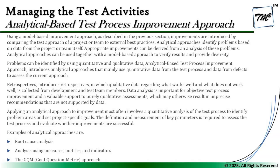Problems can be identified using both quantitative and qualitative data. The analytical-based test process improvement approach mainly uses quantitative data from the test process and defect data to assess the current approach. Qualitative data is more about understanding, belief, and confidence - for example, after interacting with a system for a year, you can verbally explain your confidence level regarding defects found and system readiness.